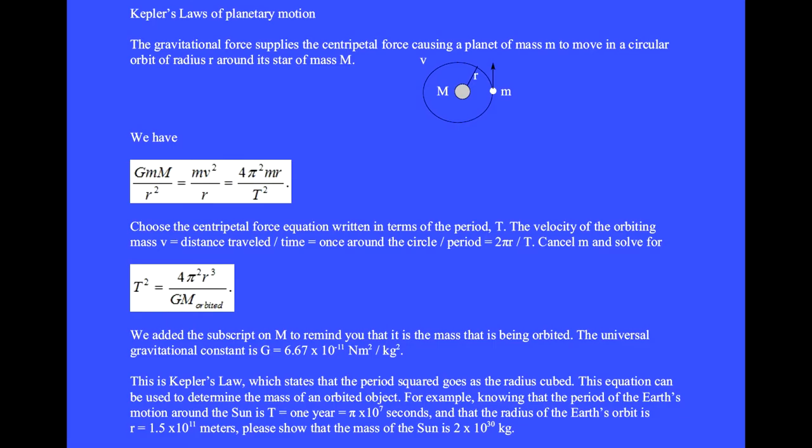The gravitational force supplies the centripetal force causing a planet of mass little m to move in a circular orbit of radius r around its star of mass big M. We have G little m big M over r squared equals m v squared over r. We write the centripetal force equation in terms of the period T as 4 pi squared little m r over T squared. The velocity of the orbiting mass is the distance over time: 2 pi r over T. Cancel m and solve for the period squared equals 4 pi squared over G times the mass of the orbited object times r cubed. This is Kepler's third law: the period squared goes as the radius cubed. This equation can be used to determine the mass of an orbited object.